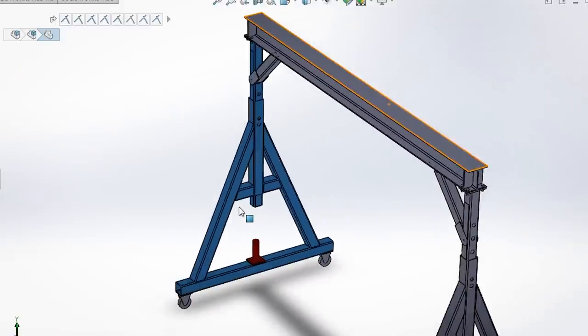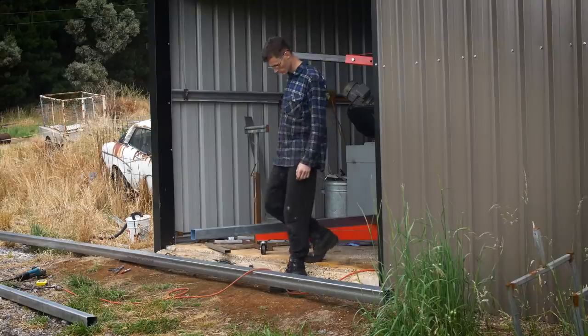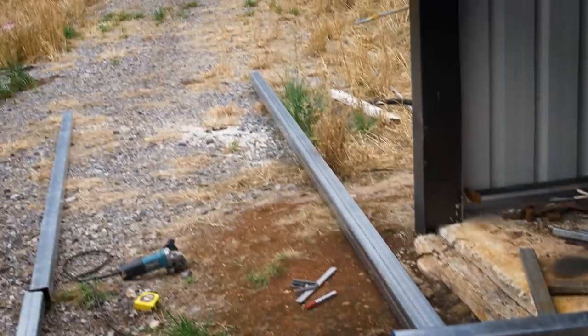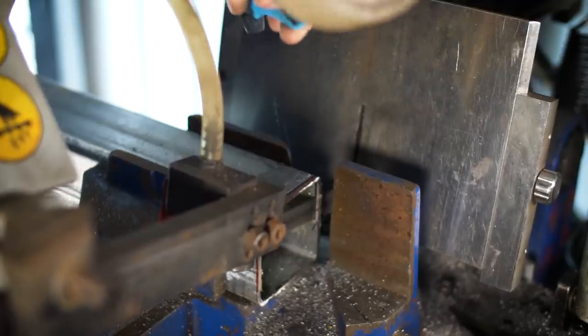Let's start looking at making the A-frames and the legs. These long pieces of steel are hard to manage so I'm initially chopping them apart with the angle grinder and then tidying up the ends on the bandsaw.